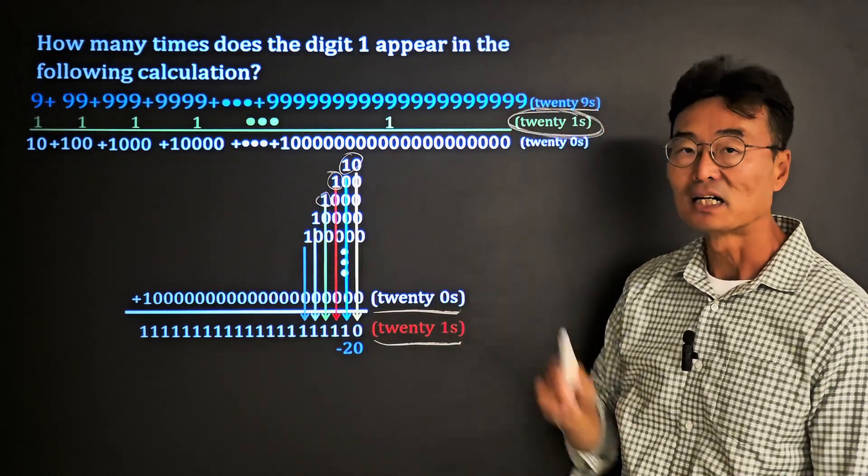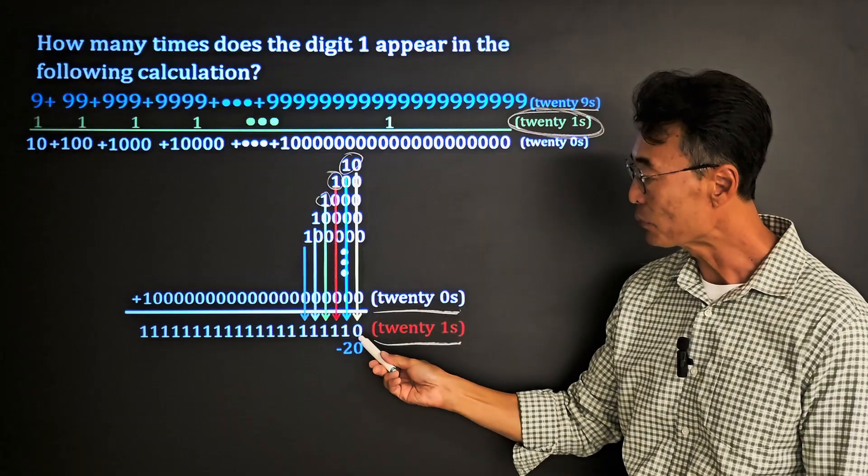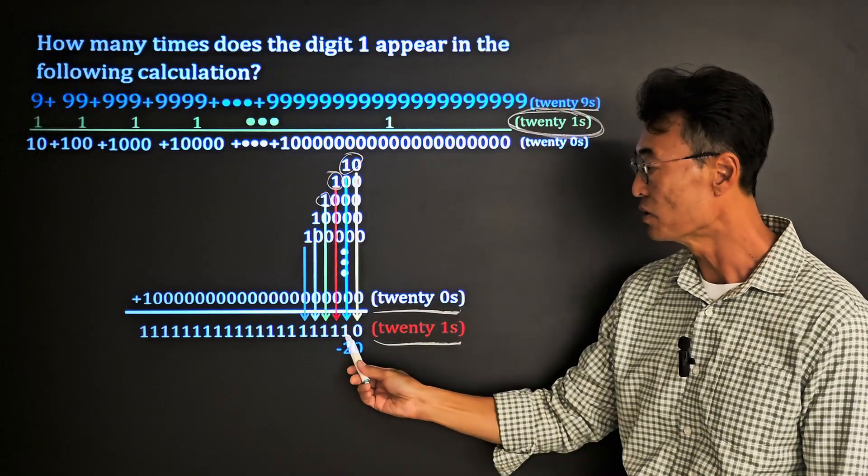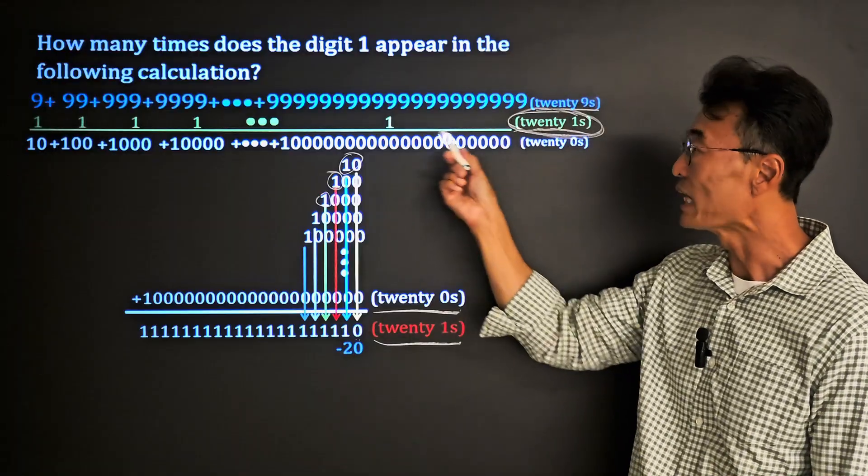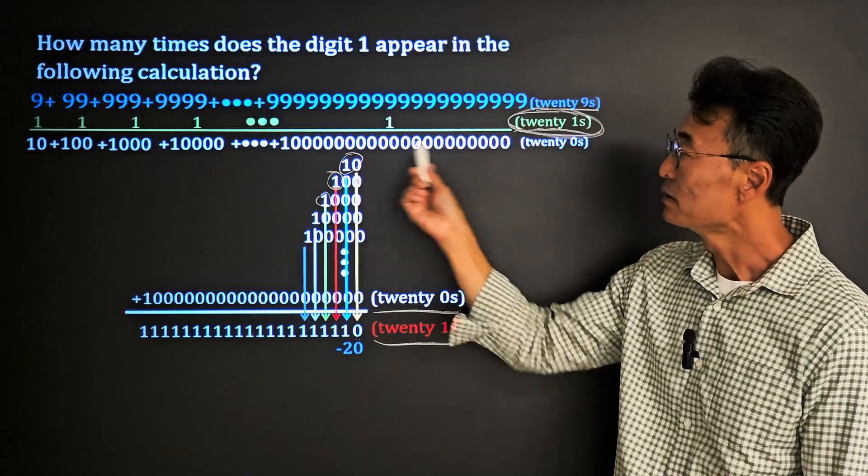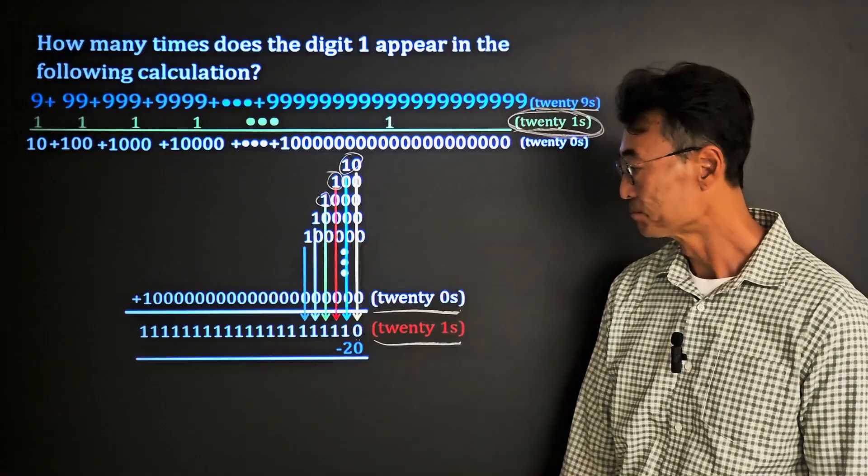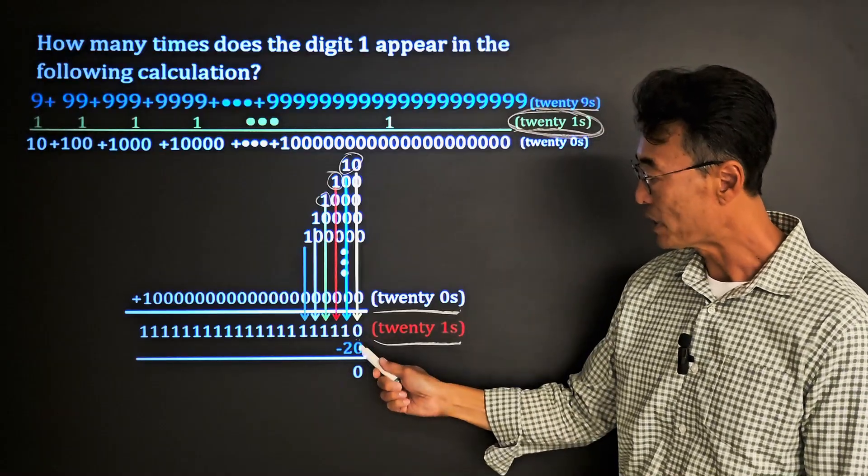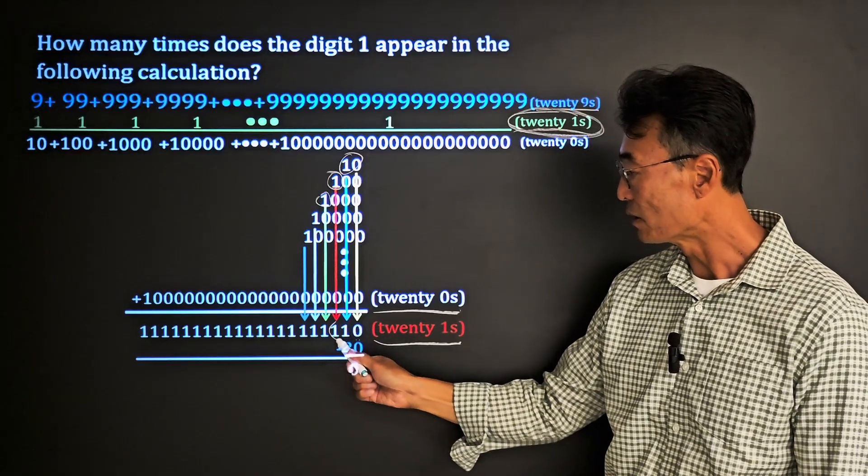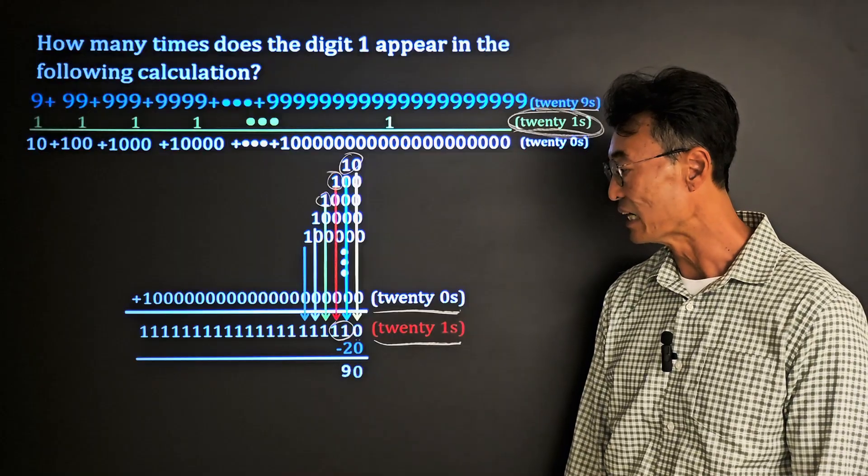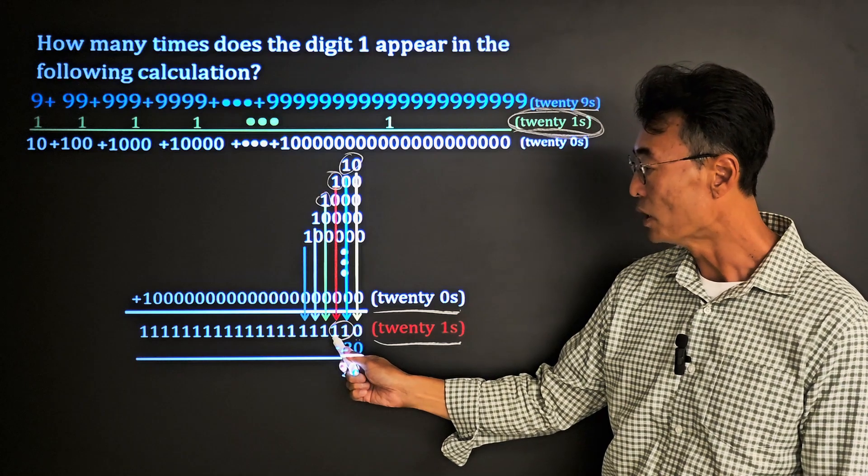So from the sum that we have here, the one with the 20 ones, this number right here, we're going to subtract the 20 ones that we have added in order to get this number here, the ones with the zeros. So if we subtract, then zero minus zero is zero. Here 11, 11, 11 minus 2 is 9. And then of course since we borrowed the one from here to subtract the two, we now have a zero.